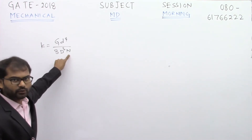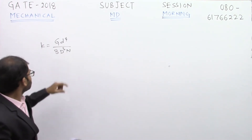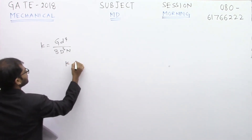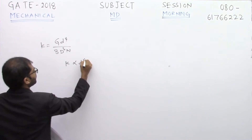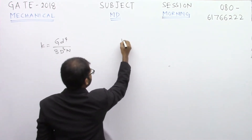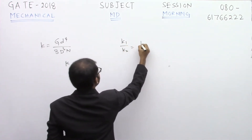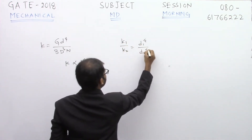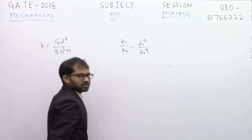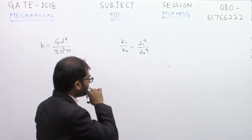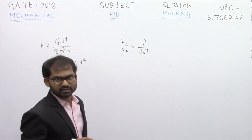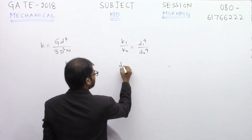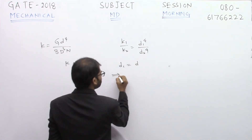We can see that k is proportional to d to the power of 4. So we take the ratio k1/k2 = d1⁴ / d2⁴. This is the key relation for solving this problem.